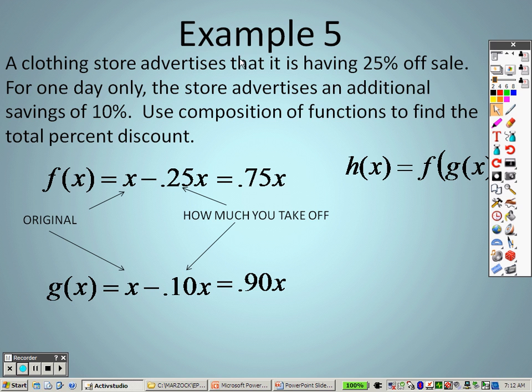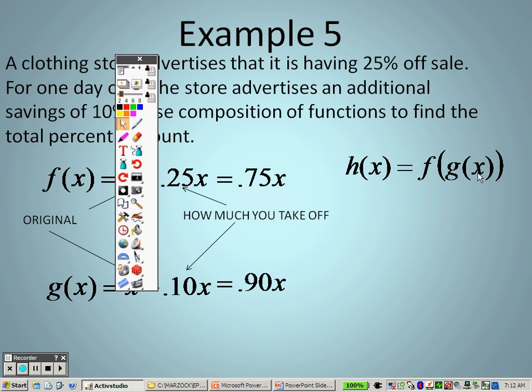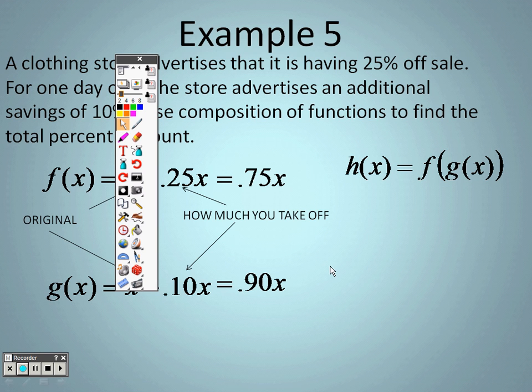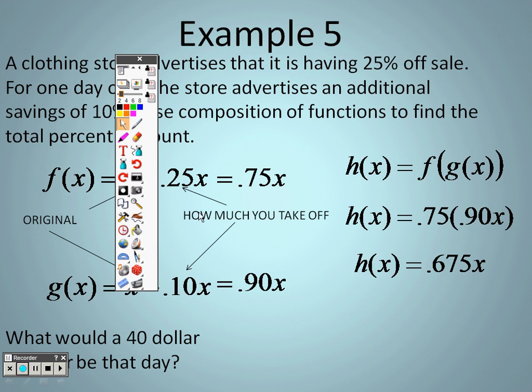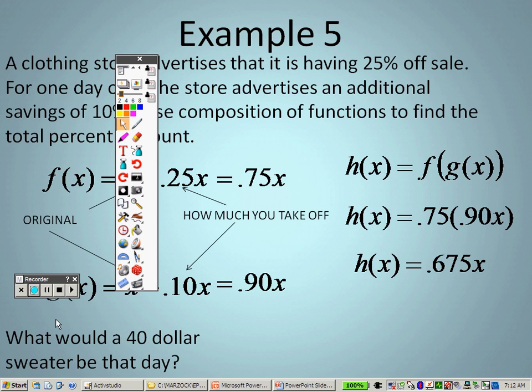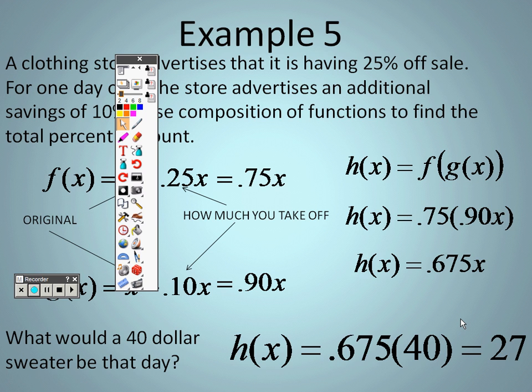So what that's really saying is, you take the second discounted item, which is this 90%, and you plug it in for x. So it's 0.75 times 0.90x, and when you multiply it together, you get 0.675x. So how or what would a $40 sweater be that day? Well, I just take 40 and plug it in there, and when I do, I end up with $27.